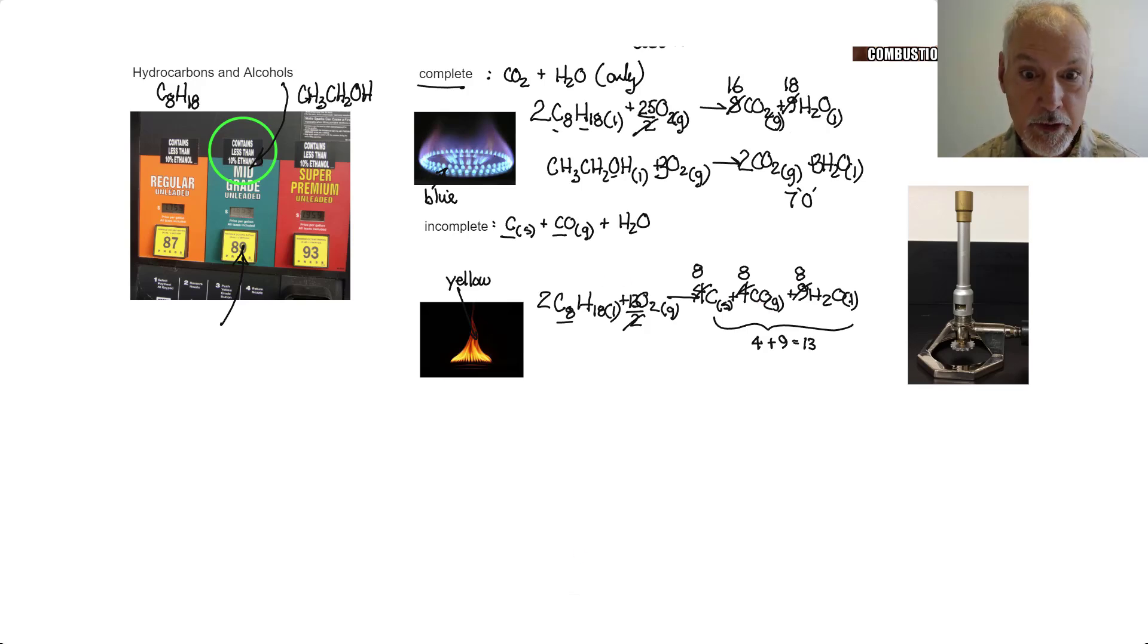Now, what causes something to burn incompletely? We can usually trace it down to two reasons. The first reason could be there's a limited supply of oxygen. Some of you might have used a Meckler burner, something like this one. And by turning that knob at the bottom, you can change the amount of air and hence oxygen getting into your flame. That allows you to change it from a blue flame to a yellow flame and back and forth. As you tighten it, you reduce the amount of air and hence oxygen, producing a yellow flame.